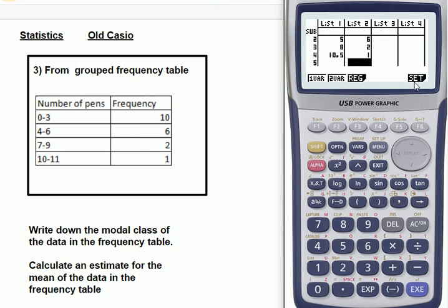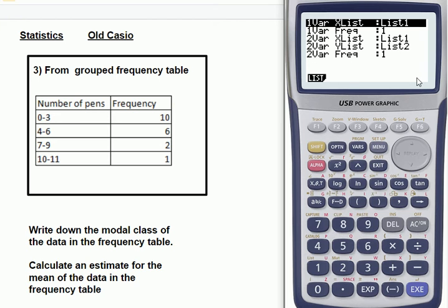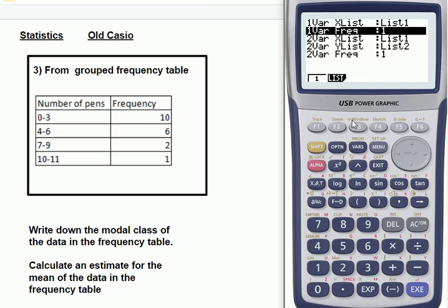So you need to look at the settings, and you need to make sure it's set up for a frequency table. Right now, this is set up for a list of numbers. It says list 1, 1. If you want the frequency table setting, it needs to be list 1, list 2. Not 2, list 2.